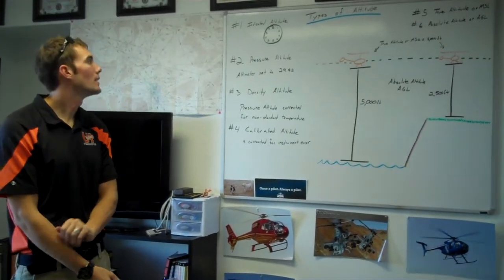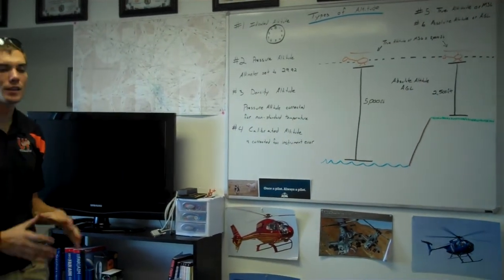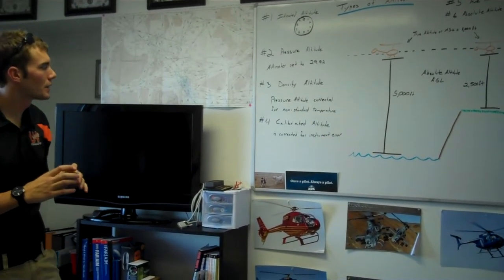We have six different types. The first one being indicated altitude. That's just what you're going to read on your altimeter as you're out there flying.